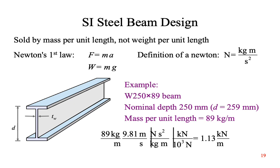Steel beams in the U.S. are sold by weight per unit length. In most of the rest of the world, they're sold by mass per unit length, which means we have to add another step before we can solve these problems. Newton's first law says that force equals mass times acceleration. In our case, the force is weight and the acceleration is gravity. When people talk about the force of gravity, they're really talking about weight. We'll need an SI unit definition before proceeding. The unit of weight in SI units is the Newton, which is defined as a kilogram meter per second squared.